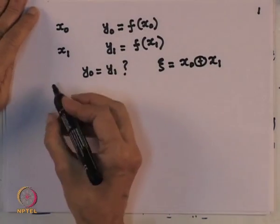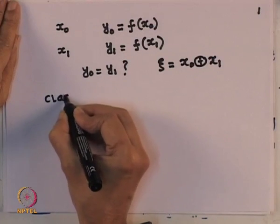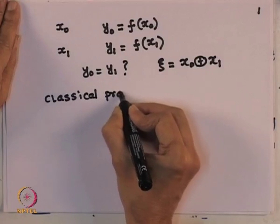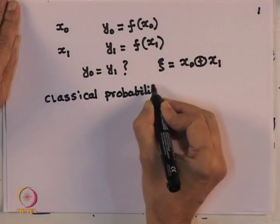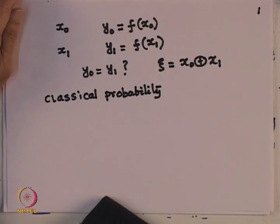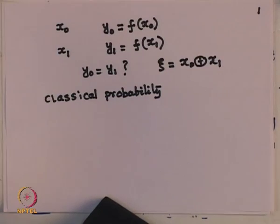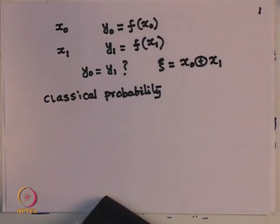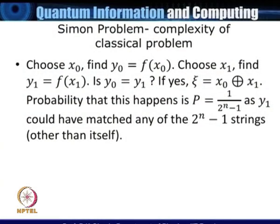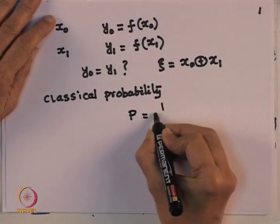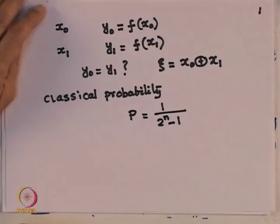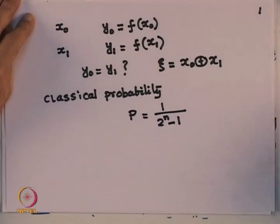What is the classical probability of this happening? Notice that y1 could in principle match with the function of any of the other 2^n − 1 inputs. As a result, the classical probability of a match on the second pick is 1/(2^n − 1), which is obviously a small probability as n increases.